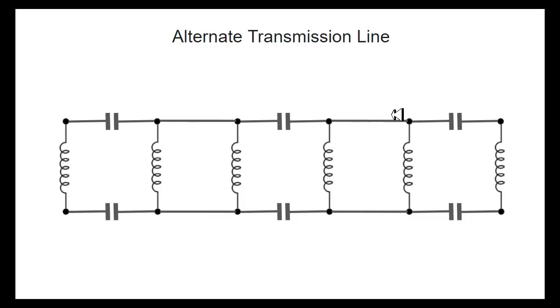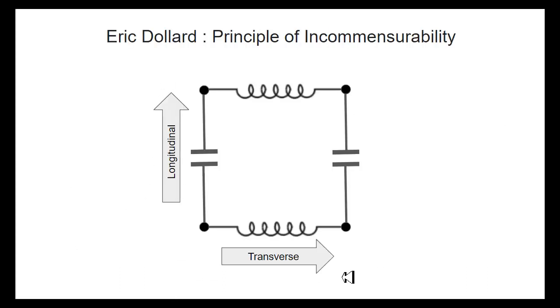When something's wired in series, it's not wired in parallel. And when something's wired in parallel, it's not wired in series. And so, there is a lot of incommensurability built into this transmission line unit. And I find that really interesting.